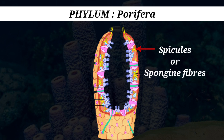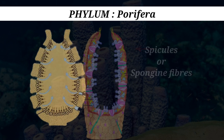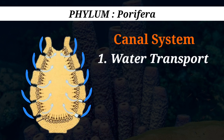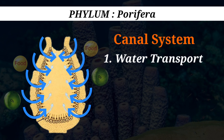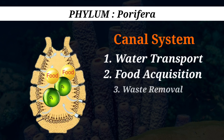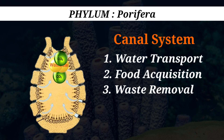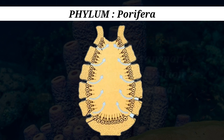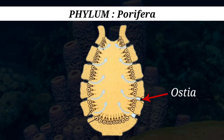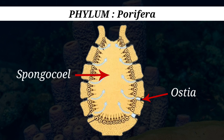The skeleton is comprised of spicules or spongin fibers. Sponges possess a canal system for water transport, food acquisition, and waste removal. In this system, water enters through tiny pores known as ostia, into a central cavity termed the spongocoel, and exits through the osculum.